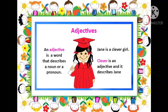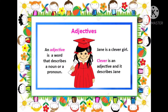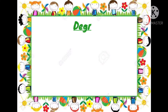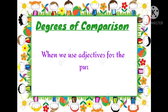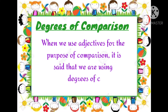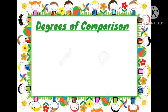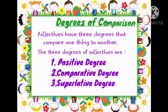As you all know, adjectives are the words which are used to describe, qualify, or quantify a noun or pronoun. And when these adjective words are used for the purpose of comparison, it is said that we are using degrees of comparison. Adjectives have three main degrees to compare one thing with another.